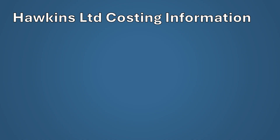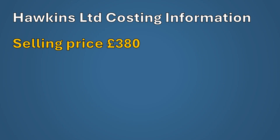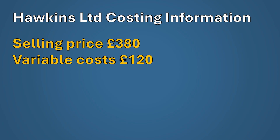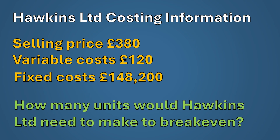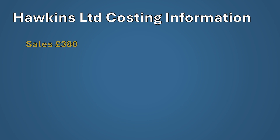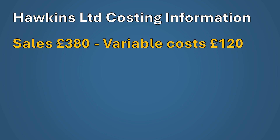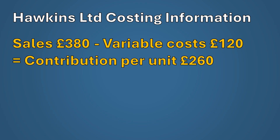Let's look at a case study. Hawkins Limited are looking to introduce a new product with a selling price of £380, variable costs of £120, and an increase in fixed costs of £148,200. They've asked how many units they would need to sell in order to breakeven. The first step is to calculate the contribution per unit: take the selling price of £380 and subtract the variable costs of £120, which gives a contribution per unit of £260.